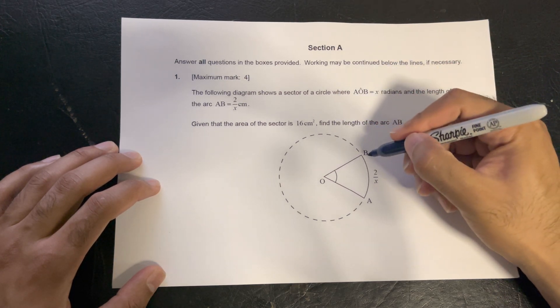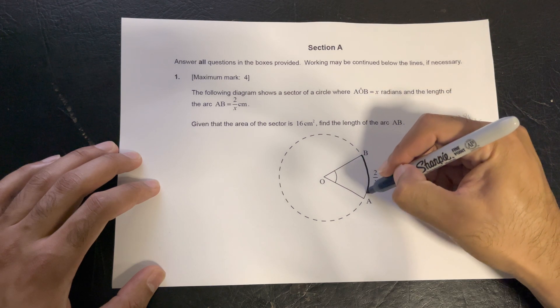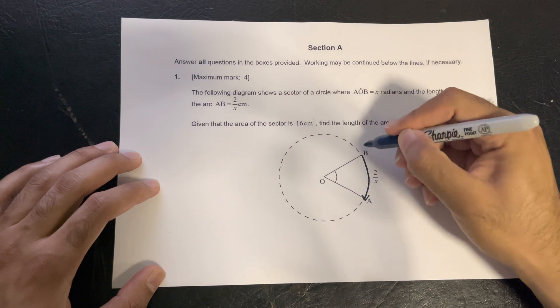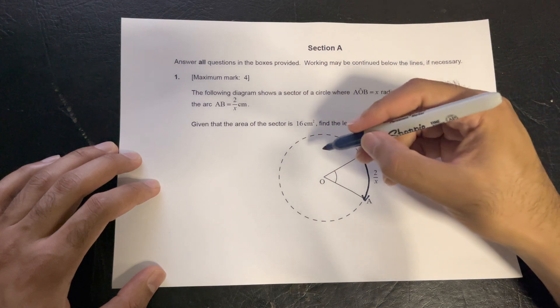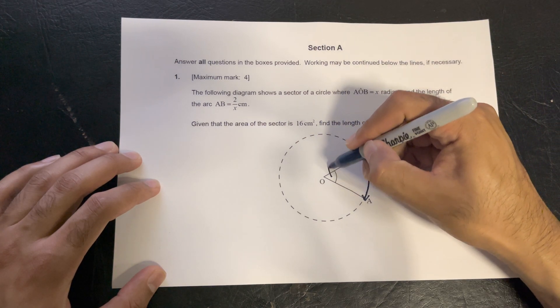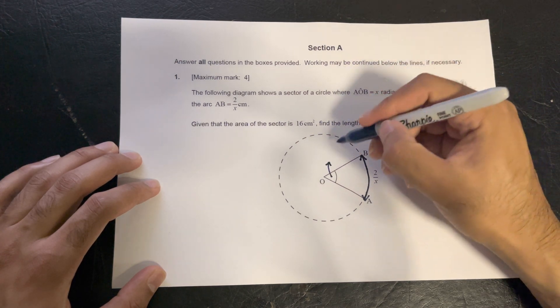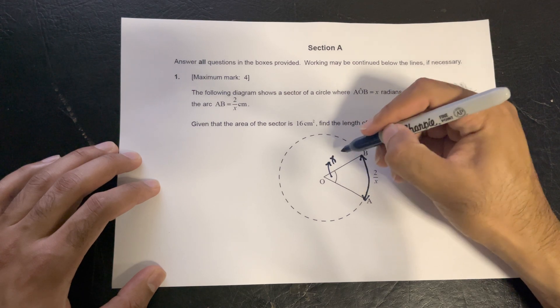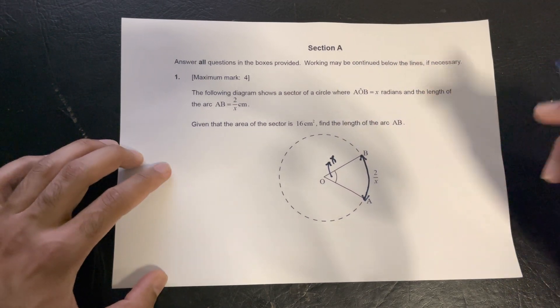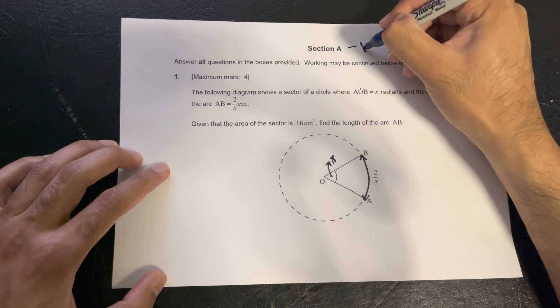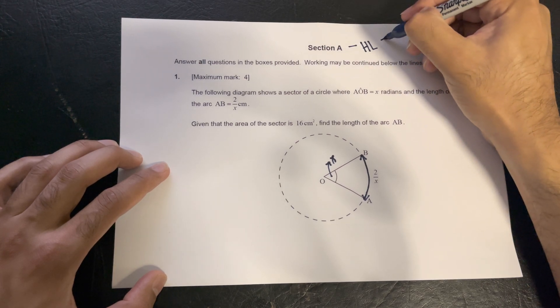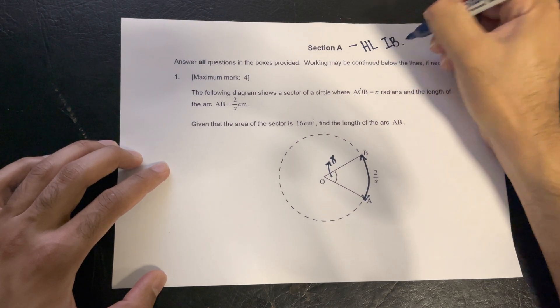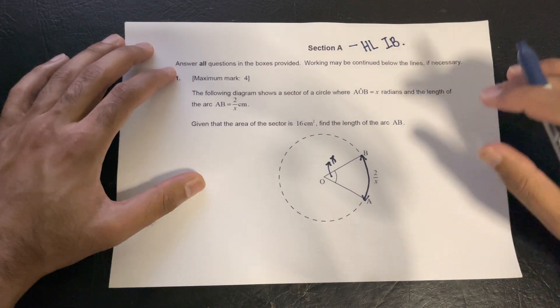So the question is asking us to calculate this length, and we've been given this radian angle as x. I'm just going to put up the top, High Level IB, and that's for the International Baccalaureate Math students.